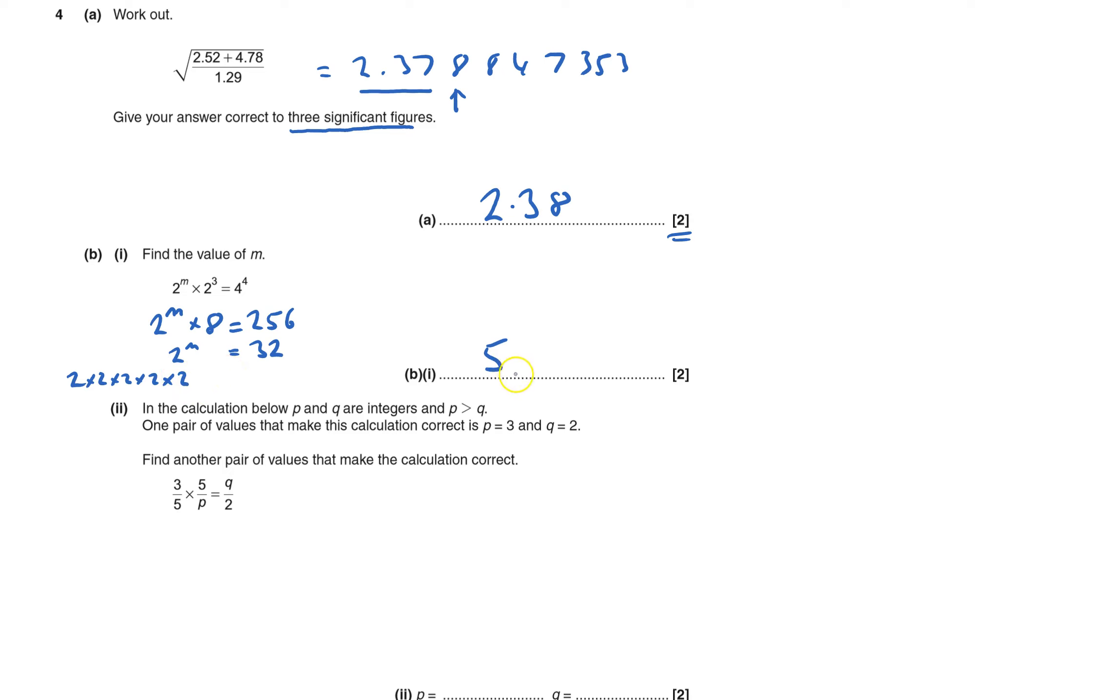You don't need that bit. You do need this bit, 5. Okay, so p and q are integers and p is greater than q. Find one pair of values that make this calculation correct is p is 3 and q is 2.